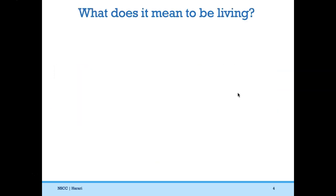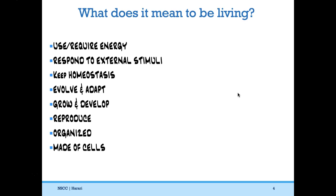Here's a list that I came up with. Living things use and require energy. They respond to external stimuli. They maintain homeostasis. They evolve and adapt. They can grow, develop, and reproduce. They are organized and they are made of cells. This is a very comprehensive list of characteristics shared by all living things, and we'll talk about each of these in this lecture.